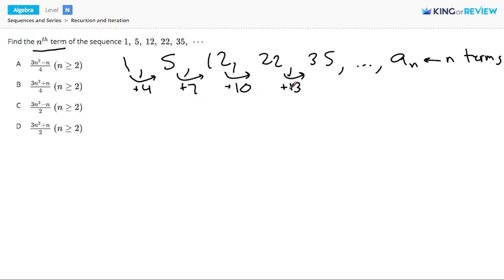These numbers are going up by 3 every single time. So, when we get to an, if we want the nth term, we start with 1. The nth term will add all of these numbers. We will add 4, and 7, and 10, and 13, all the way up to the last number we add.